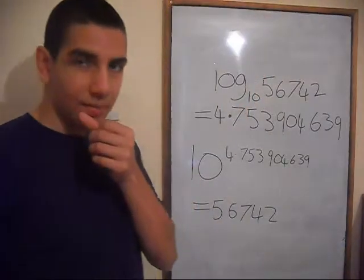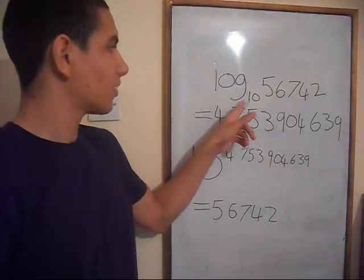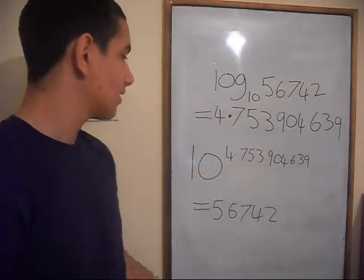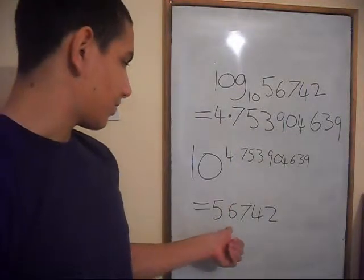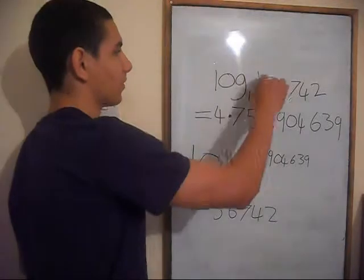You can do the same thing with much more complex numbers. If you do the log to base 10 of this number, you get that answer. And if you do 10 to the power of that number, you get an answer of 5, 6, 7, 4, 2, which is the same number as up there.